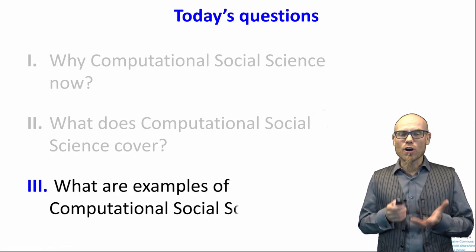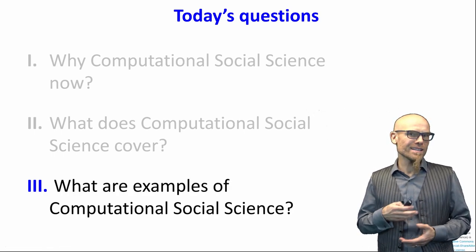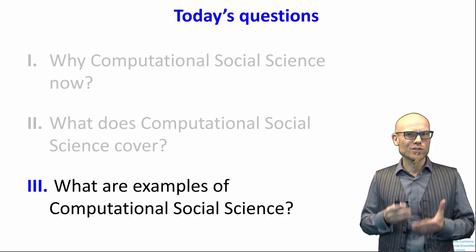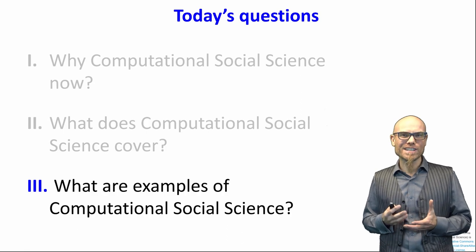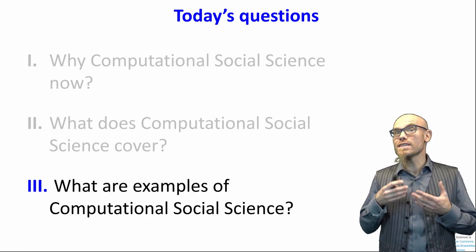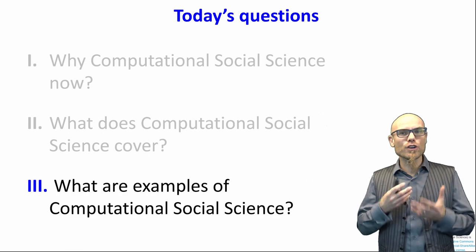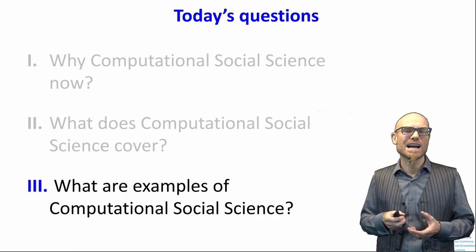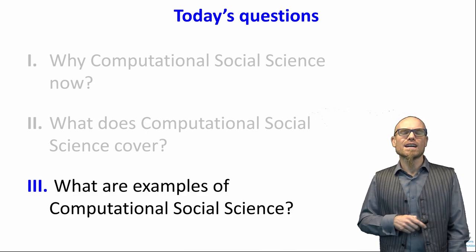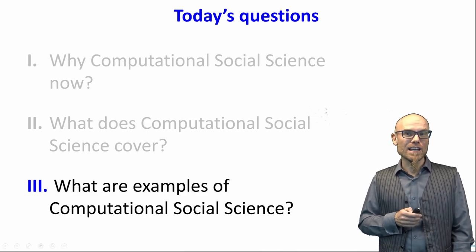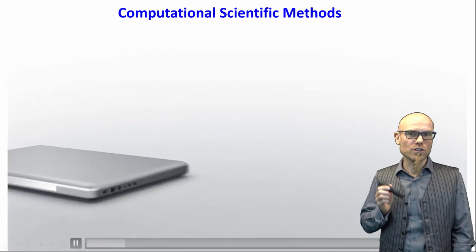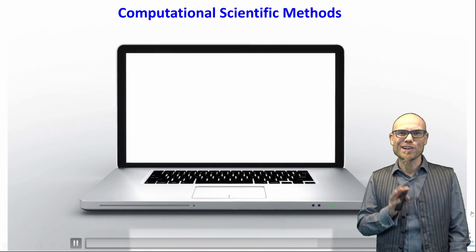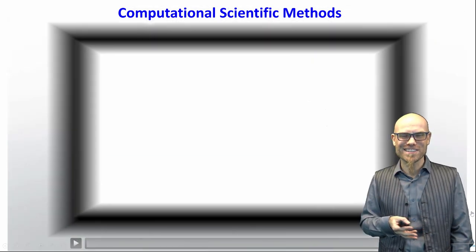What are some examples of computational social science? This last part will basically be a short overview of the content of the course. In this introductory course, we give you an overview of different examples of doing computational social science, exposing you to some of the methodologies involved. We start with our computational scientific methods, and this framework will guide us through the entire course.